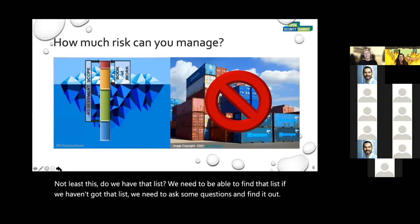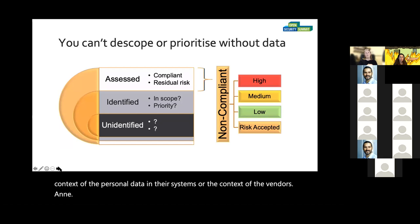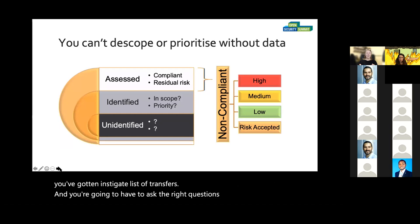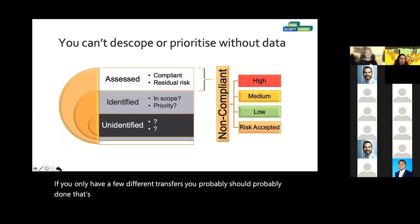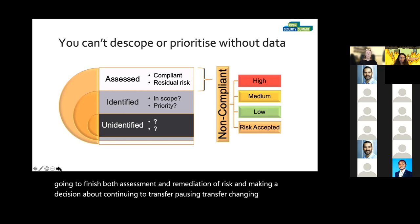Really, we're wondering which part of the risk we can manage. If you don't have a list of in-scope transfers, you've got to find one. Once you've got an in-scope list, you're going to have to ask the right questions to decide whether they stay in scope and then work out a priority for assessment. A lot of businesses have far more transfers than they expect. If they're not going to finish both assessment and remediation quickly, they're going to need to prioritize — deciding whether to continue transfers, pause them, change contracts, or change controls.